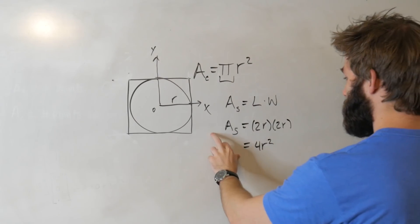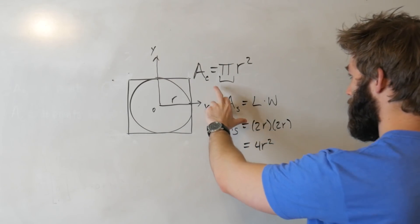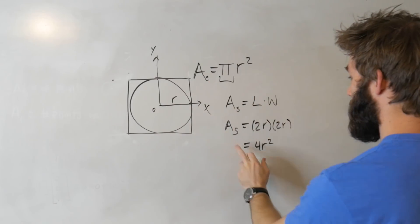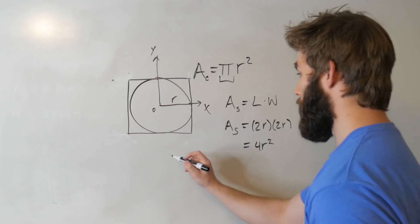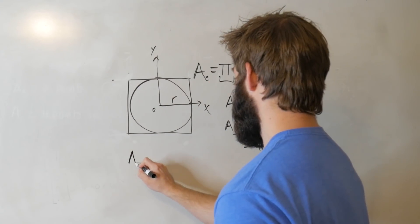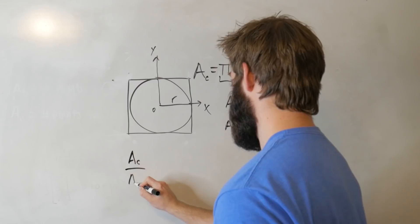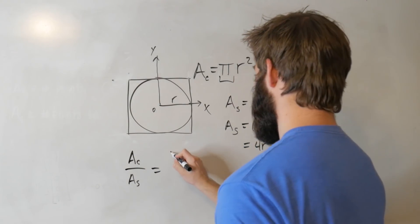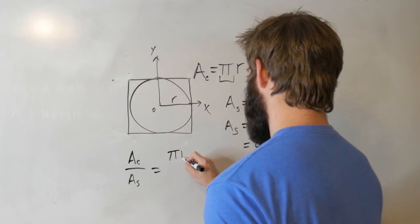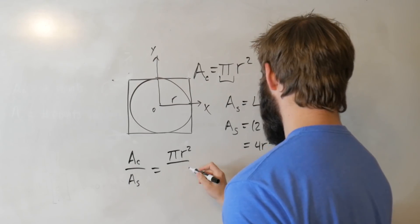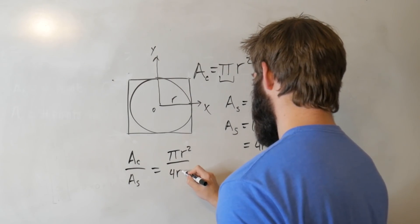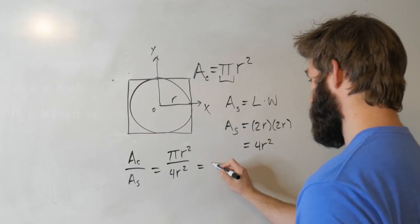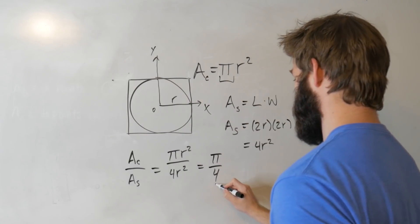Now what I'm going to do is divide the area of the circle by the area of the square. So Ac divided by As is equal to pi r squared divided by 4 r squared, or in other words, this is equal to pi over 4.